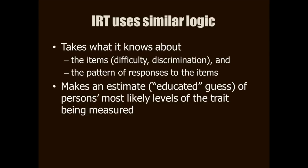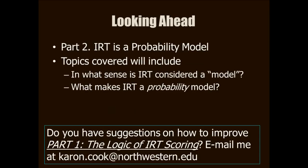IRT takes what is known about items — including difficulty and possibly item discrimination — and takes into account the pattern of item responses for each individual. Then it makes an estimate of each person's most likely level of the trait being measured. You can think of this estimate as equivalent to your educated guess in the previous exercise. That's it for Part 1. Now you have a definition of measurement and you're beginning to understand that there's more than one way to assign numbers according to rules.